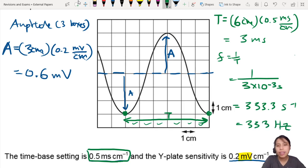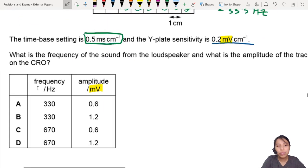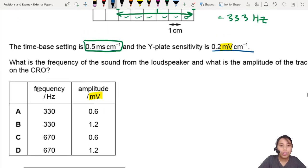So 333 somewhere there. Let's look for our answers. So 0.6 and 333. So 0.6, this is good. This is wrong. 330, somewhere there. So A is the best choice.